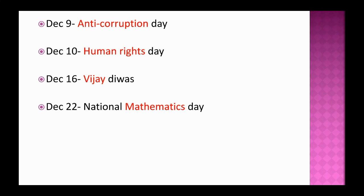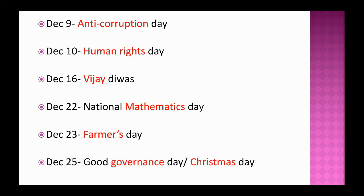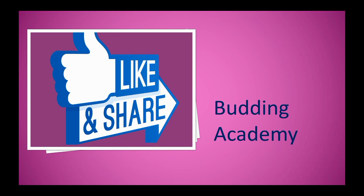22nd December is National Mathematics Day. 23rd December is Farmers Day. 25th December is Good Governance Day and also Christmas Day. That's all for today. Thank you for watching the video. If you like the video, please hit the like button and subscribe to Budding Academy. Give your suggestions in the comment box and share the videos with your friends. Thank you.